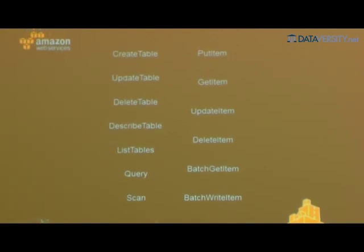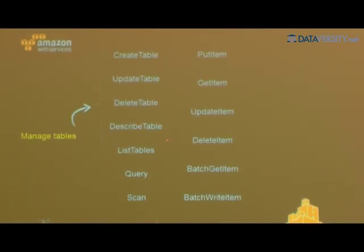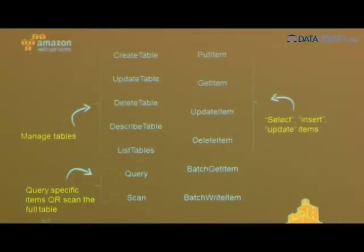The 13 API calls cover: creating, updating, deleting, and describing tables; querying specific items within a table or scanning the full table — but you only get back a maximum of 1 MB per call, so you need multiple or paged calls for large scans. When you do a scan, be careful not to max out your read throughput. At the item level: put, get, update, and delete items. You can also do batch items up to 1 MB for bulk updates.